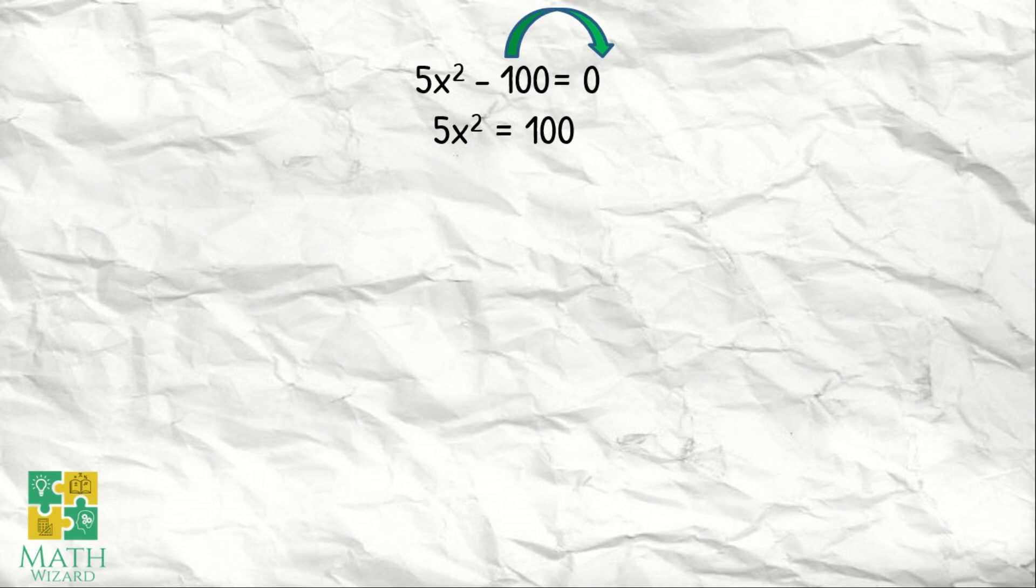Let's have our next example, 5x squared minus 100 is equal to 0. So, what's the first step? We need to isolate 5x squared. So, move 100 to the right side of the equation, and if we transpose that one, it becomes positive 100.